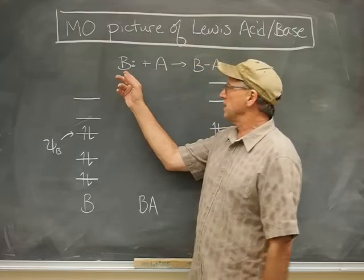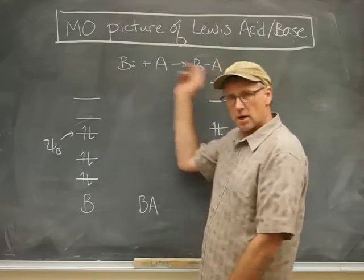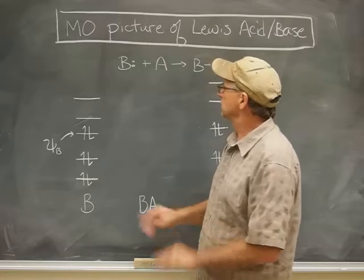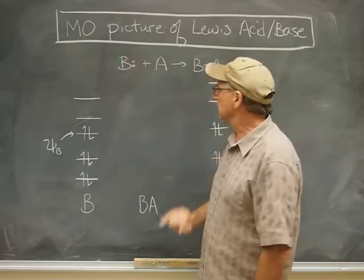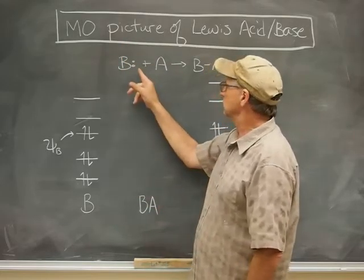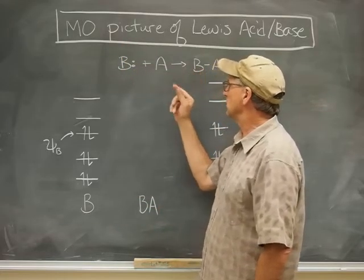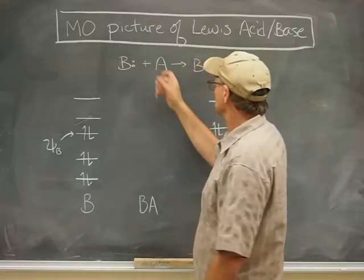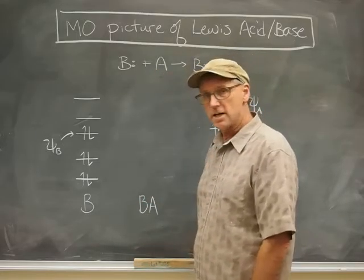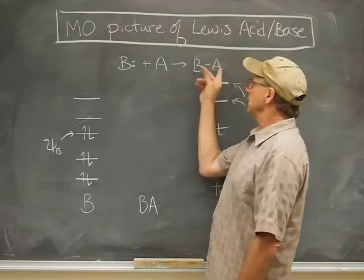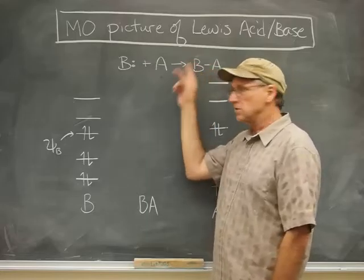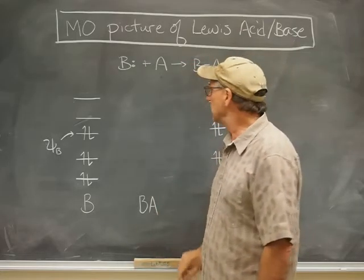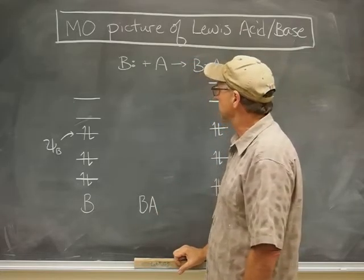Just to remind you, the stoichiometry of the Lewis Acid-Base Reaction is: a base with a lone pair of electrons available to form a bond combines with A, called the acid, to make the adduct BA — that's the product of the Lewis Acid-Base Reaction.